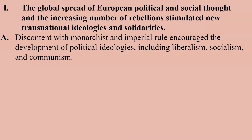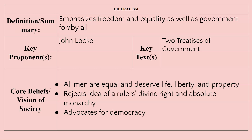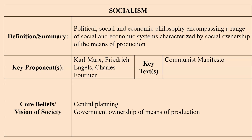The global spread of political and social thought led to an increasing number of rebellions stimulated by transnational ideologies and solidarities. Discontent with monarchist and imperial rule encouraged the development of political ideologies — liberalism, socialism, communism, and Marxism. Liberalism, which builds on Locke's ideas, is the type of government that emerged in the United States and much of Western Europe. Socialism emerged as a response to the ills of the Industrial Revolution, advocating government ownership and control, central planning of the economy, and heavy regulation of business.